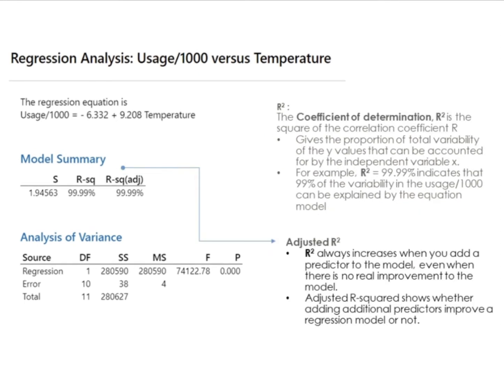Adjusted R-squared: R-squared always increases when you add a predictor to the model, even when there is no real improvement to the model. Adjusted R-squared shows whether adding additional predictors improves a regression model or not.